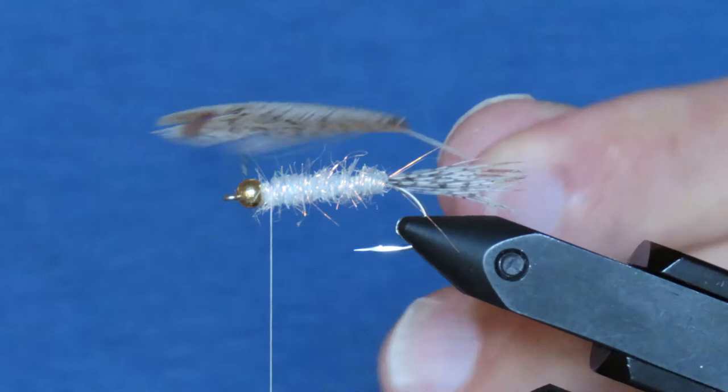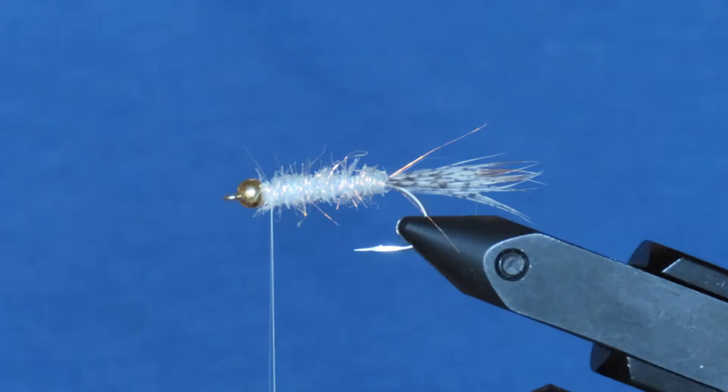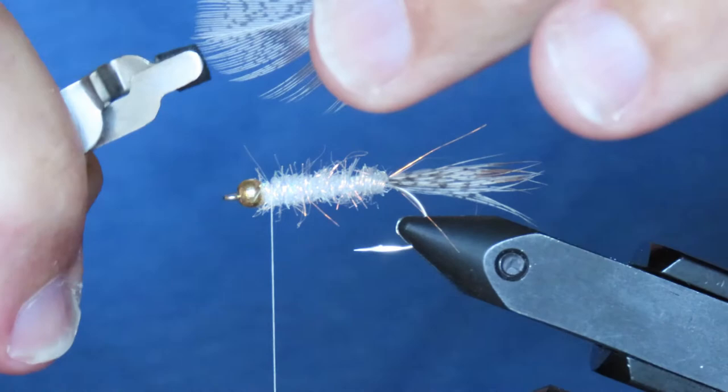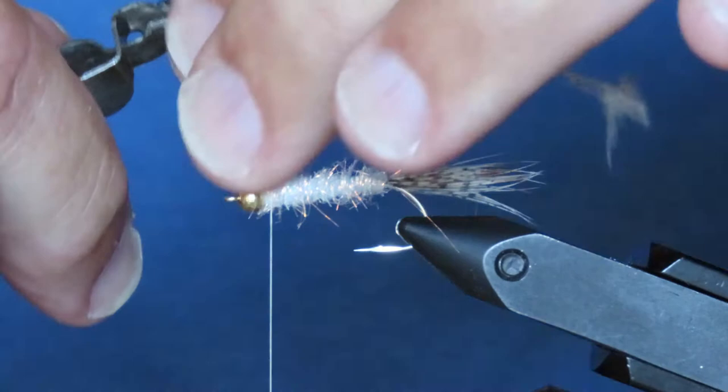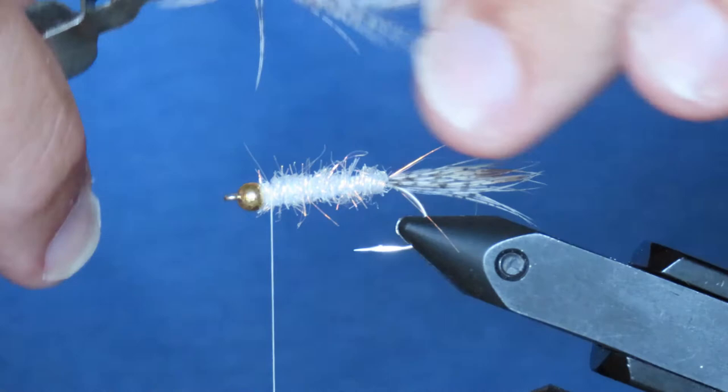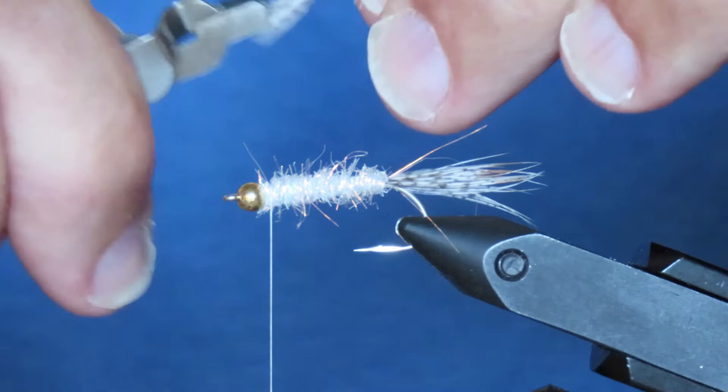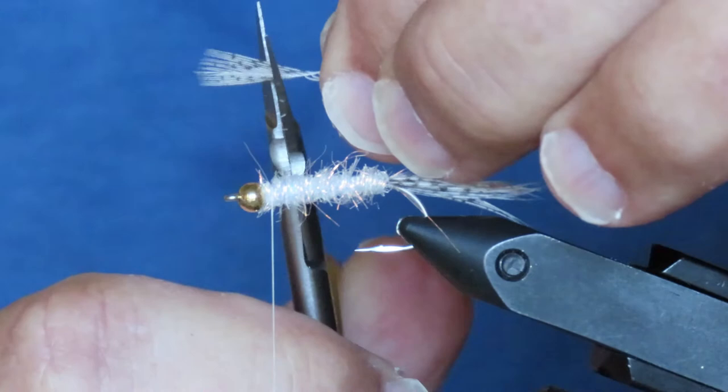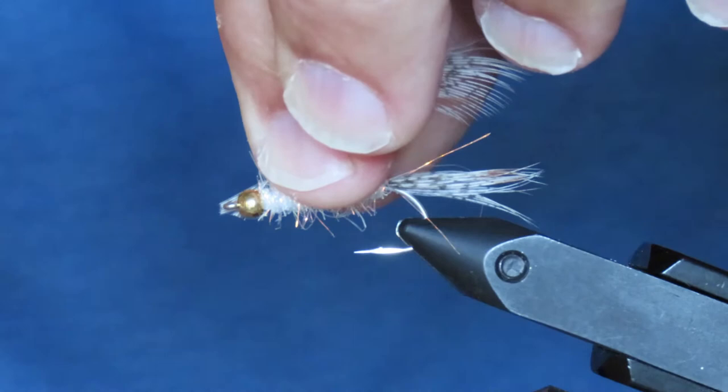Now here's the feather I've selected for my hackle, and that should be about as long as the body. And the stems of these feathers are much too thick to tie in. So I'm going to prepare the tip for tying in. I'm going to attach my hackle plier right at the point. And I'm going to sweep back all the fibers to expose just a short tip section. Like that.